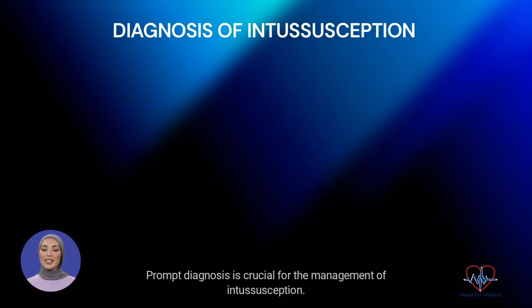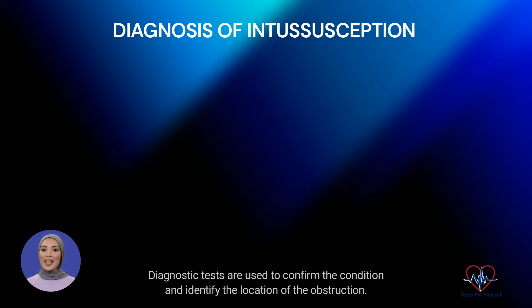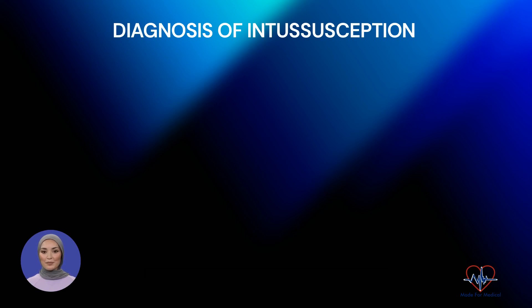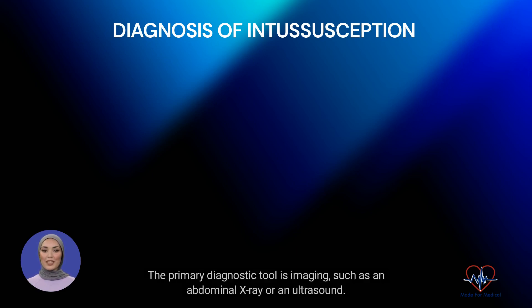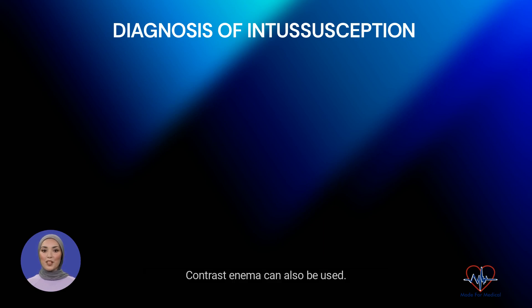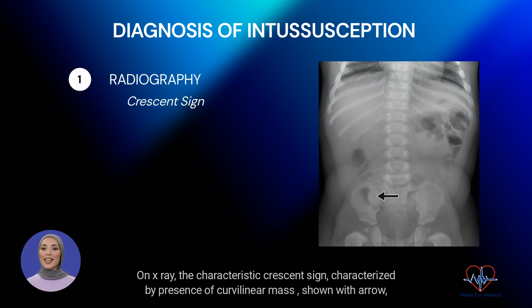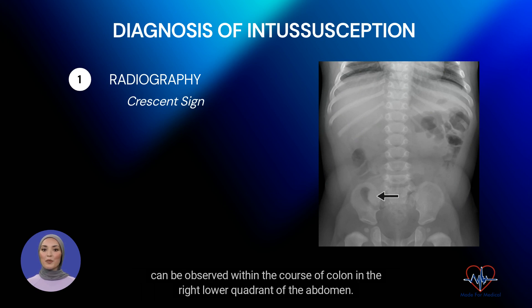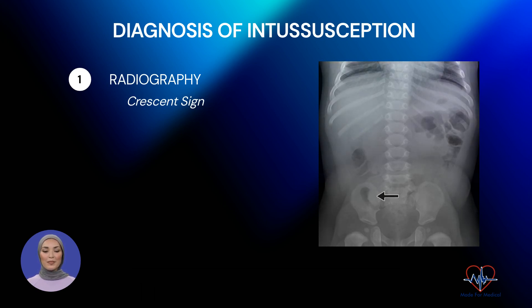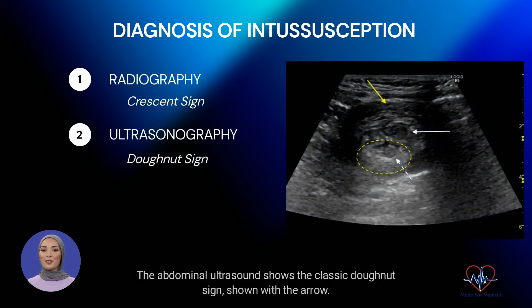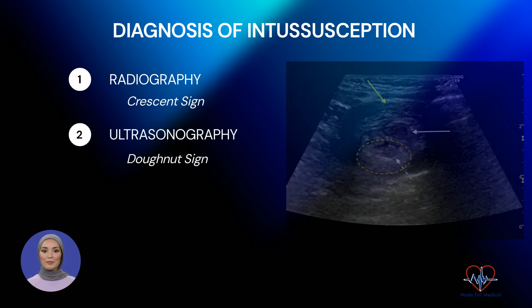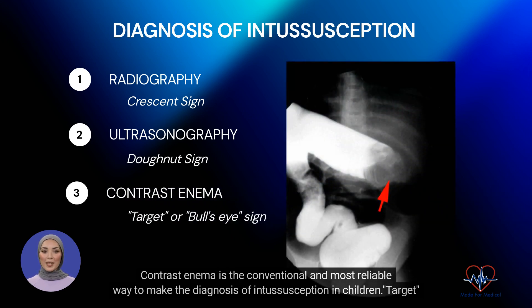Prompt diagnosis is crucial for the management of intussusception. Diagnostic tests are used to confirm the condition and identify the location of the obstruction. The primary diagnostic tool is imaging, such as an abdominal x-ray or an ultrasound. On x-ray, the characteristic crescent sign — a curvilinear mass shown with an arrow — can be observed within the course of the colon in the right lower quadrant of the abdomen. The abdominal ultrasound shows the classic donut sign, shown with the arrow. Contrast enema can also be used.